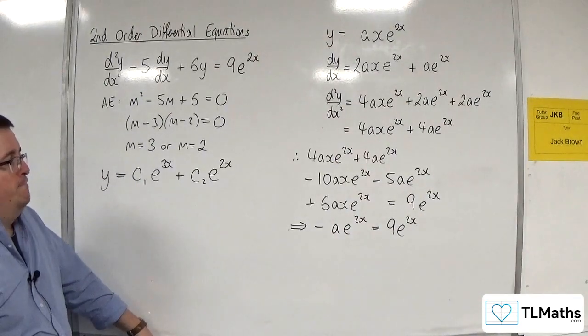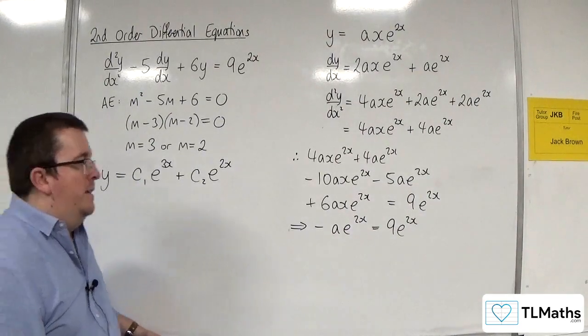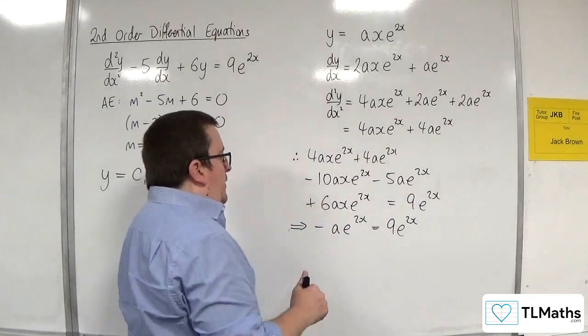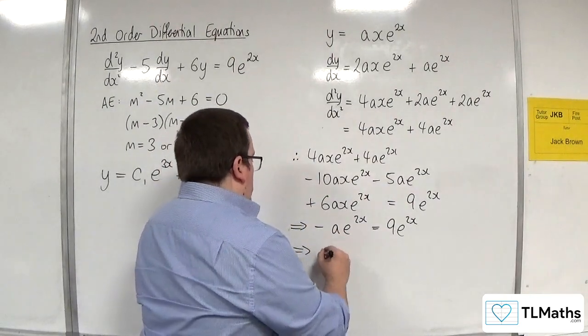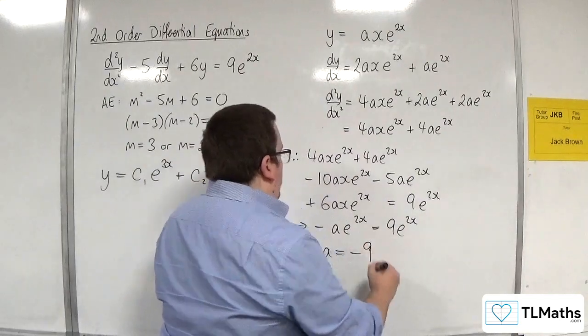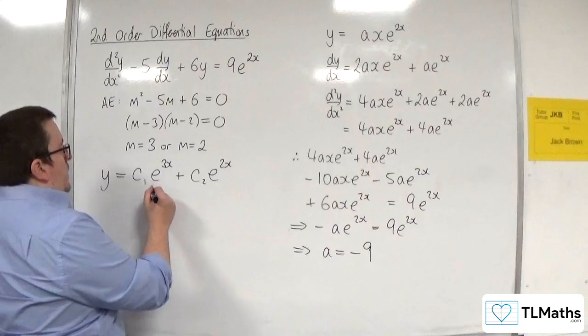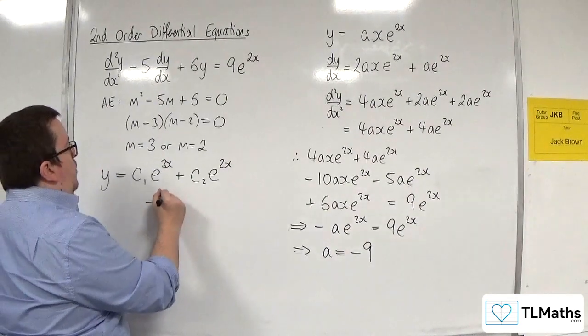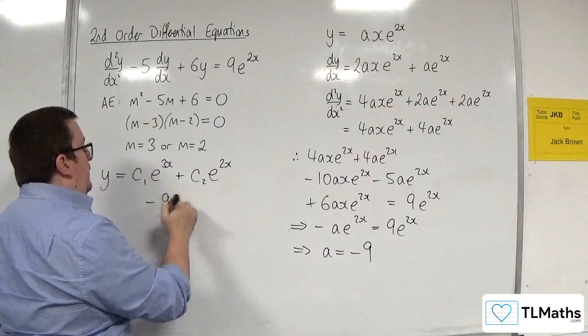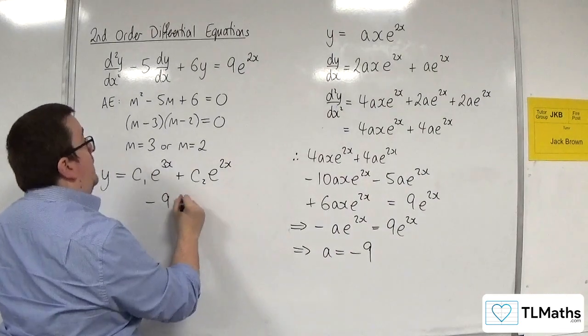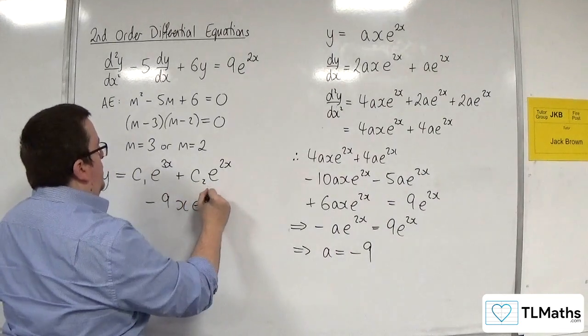So then, dividing both sides by e to the 2x because that can't be equal to 0, this is going to imply that a must be equal to minus 9. So the particular integral will be take away 9, sorry, 9x rather - 9xe to the 2x.